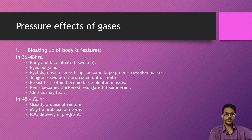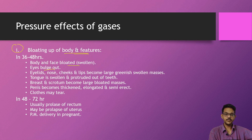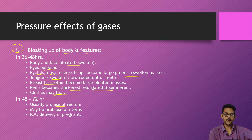As gases accumulate in the body, they lead to bloating and different pressure effects. The whole body and face gets bloated in the first 36 to 48 hours. Eyes will bulge out; eyelids, nose, cheeks, and lips become swollen masses. The tongue is swollen and protruded out of the teeth. Breasts and scrotum become large bloated masses; the penis becomes thickened and elongated. Clothes may tear apart in 40 to 70 hours.